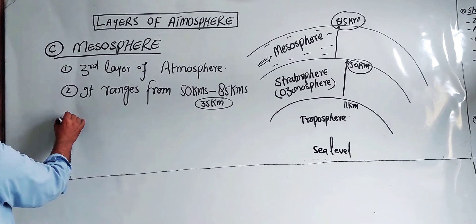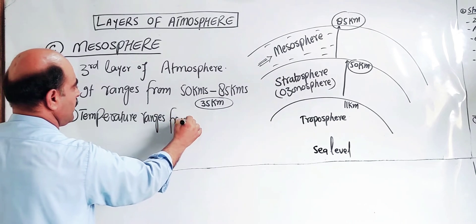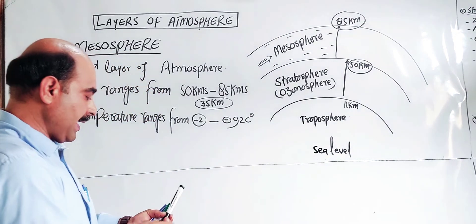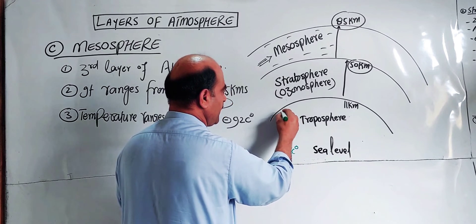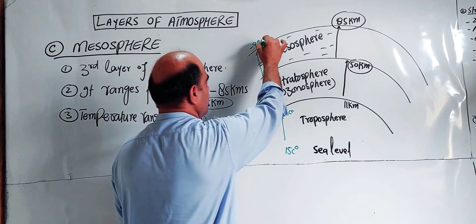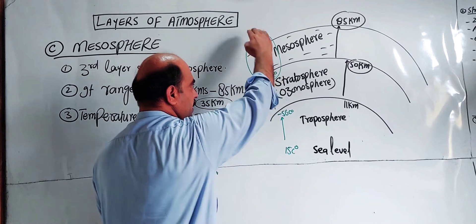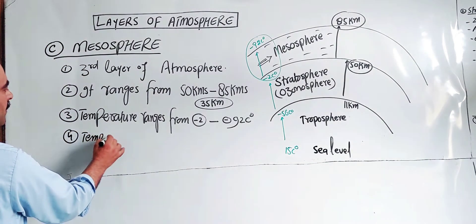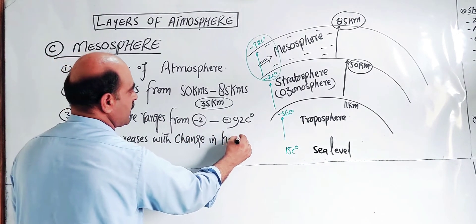The next characteristic is temperature range. The temperature in the mesosphere ranges from minus 2 degrees at the bottom to minus 92 degrees Celsius at the top. So temperature decreases with altitude, with change in height. As height increases, temperature decreases.